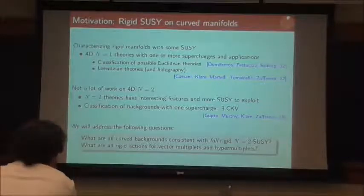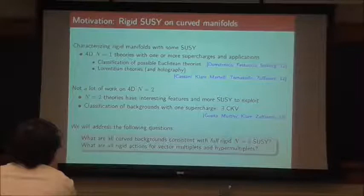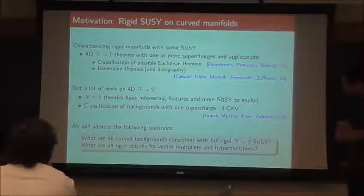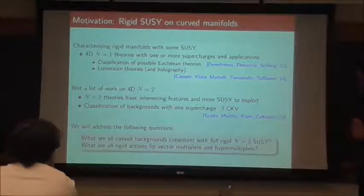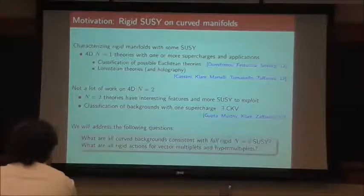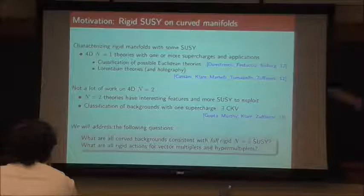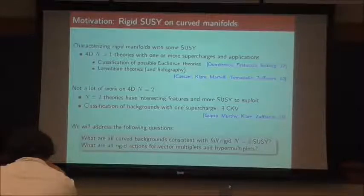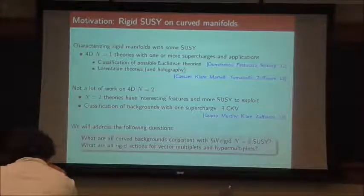So what we're going to address is the following question. First, what are all the curved backgrounds that are consistent with full rigid N=2 SUSY — so keeping all eight supercharges for N=2? That's sort of the opposite extreme, the most restrictive case you could imagine — the menagerie of N=2 possibilities. And after that, what are all the rigid actions for vector multiplets and hypermultiplets that you could conceivably construct to couple in those backgrounds?